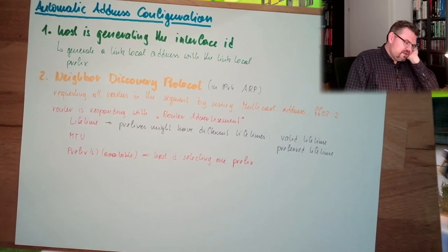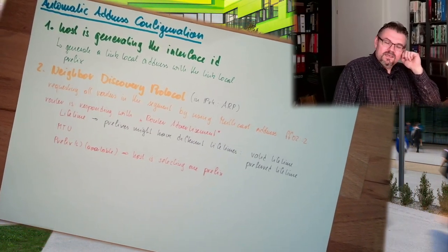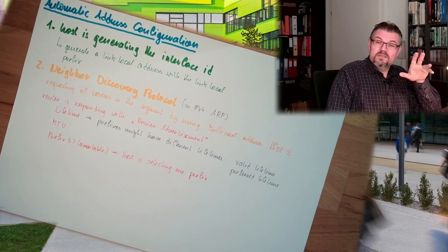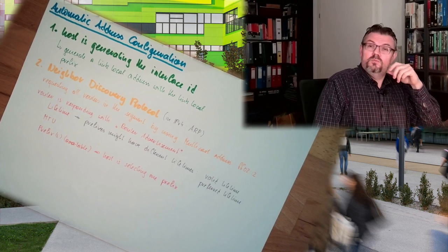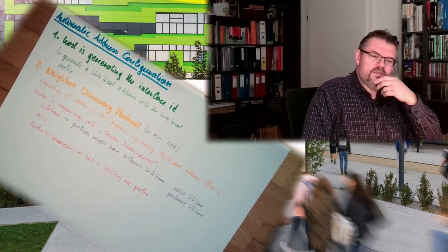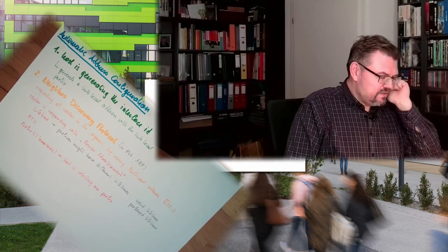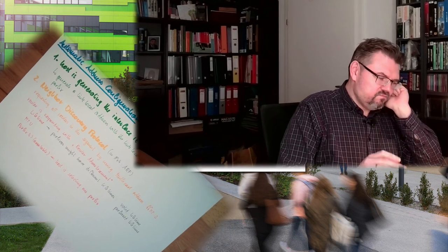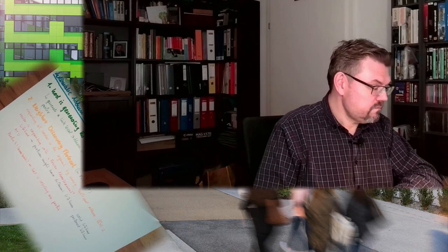So this is automatic address configuration in internet protocol version 6. Stateless, nothing is recorded, everything is up to the host and so on. It's pretty cool. It's pretty cool. We don't need a DHCP service or stuff like that. Lease times and things. It's built in. Statelessly built in.